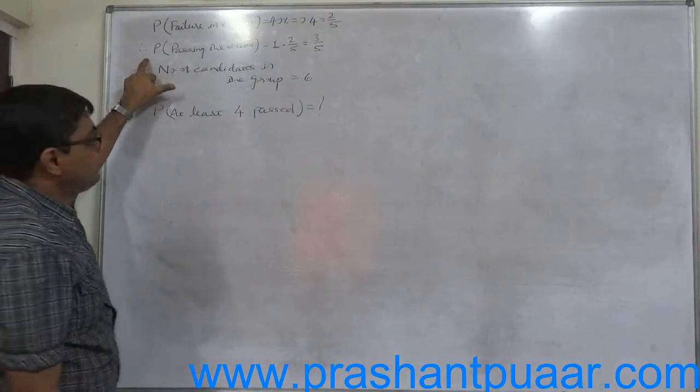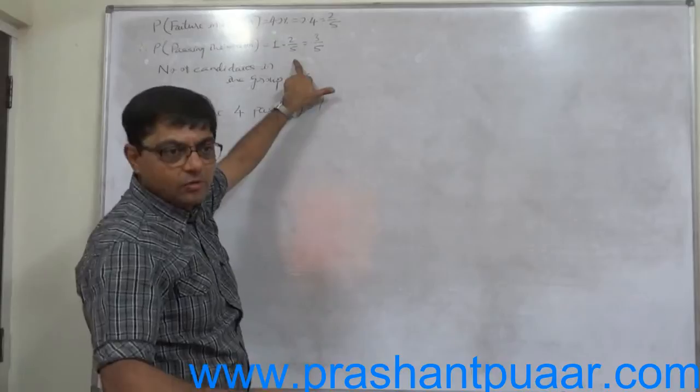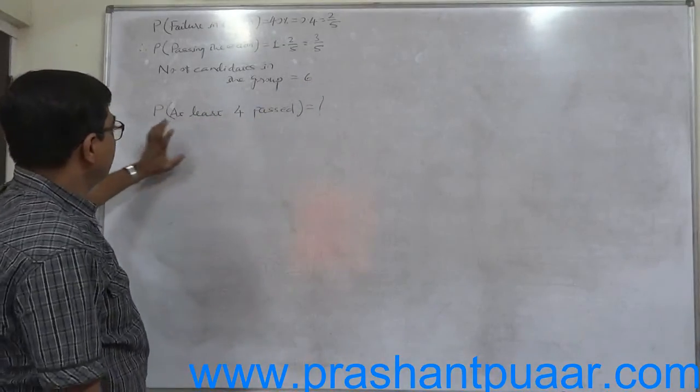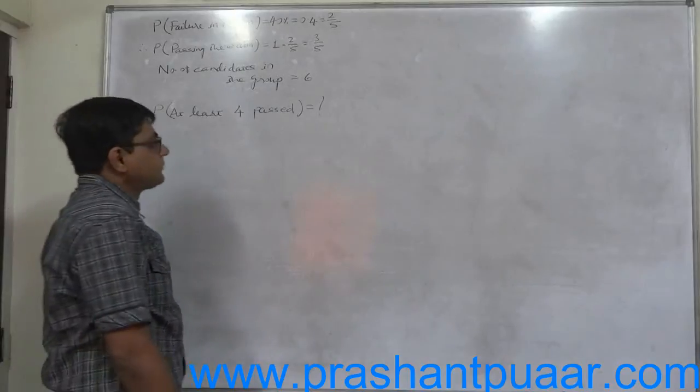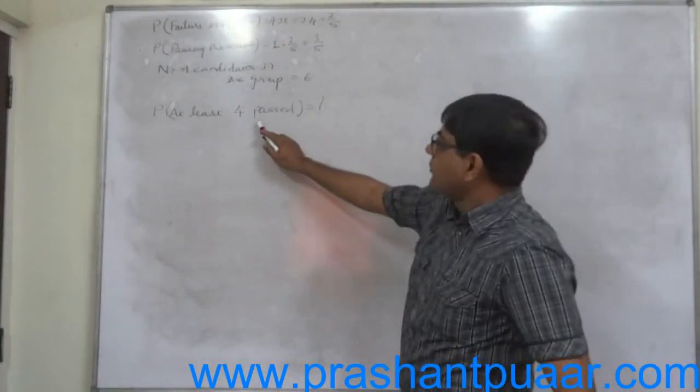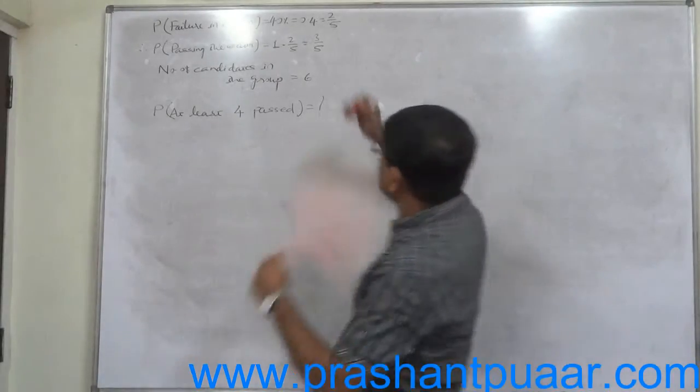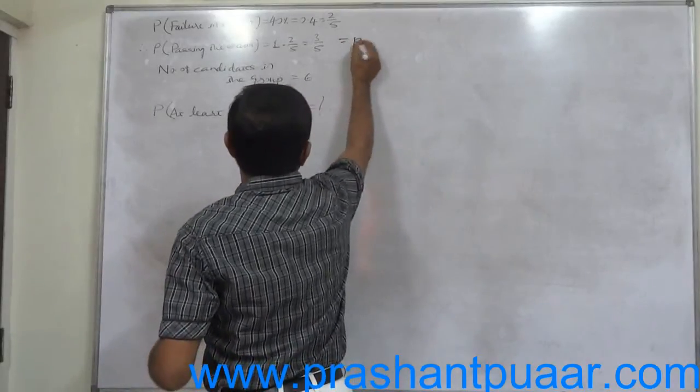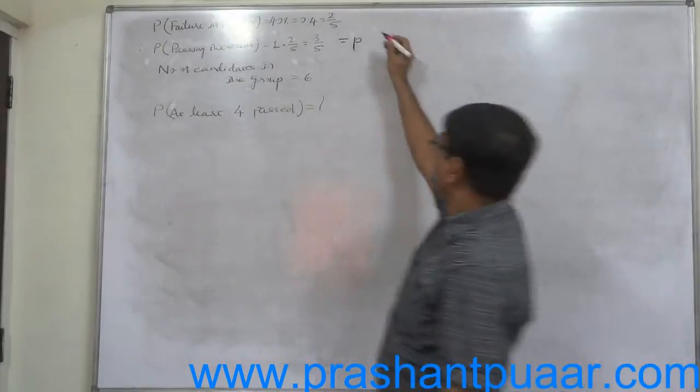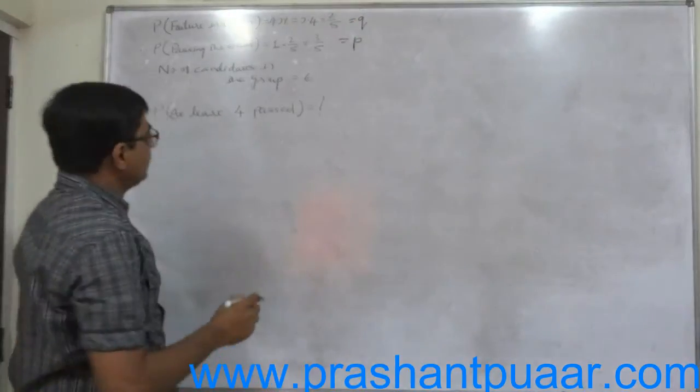That means probability of passing the exam is 1 minus 2 by 5, because passing the exam and failing in the exam are complementing ways. Number of candidates in the group is 6. First of all we want to find the final answer of passing the examination, that means 3 by 5 becomes P for us, and therefore 2 by 5 becomes Q.